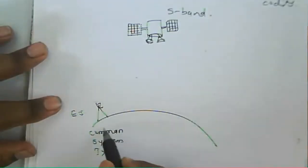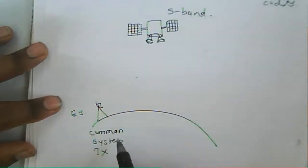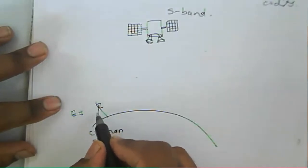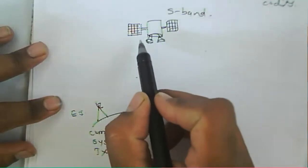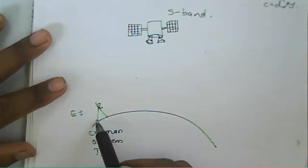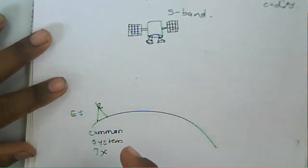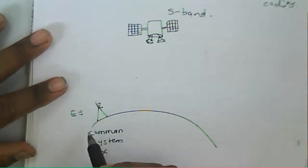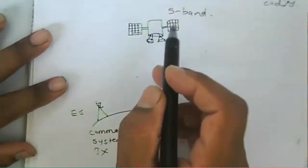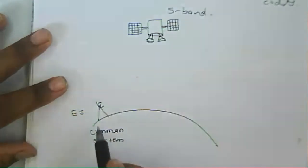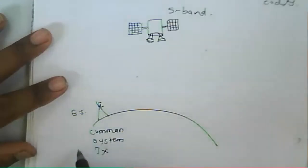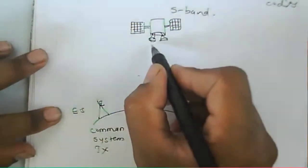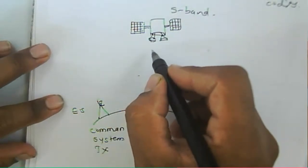The earth station sends a signal to the satellite through a command system. This command system receives health information transmitted from the satellite to the earth station, which then decodes the health parameters of the satellite and decides what action needs to be taken. The command system is essentially a computer program system that generates specific commands.